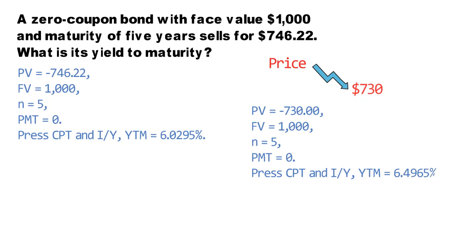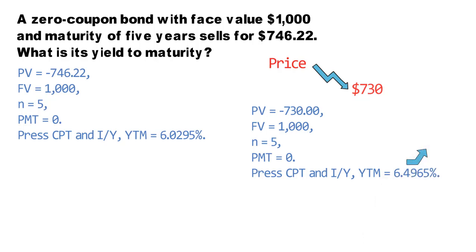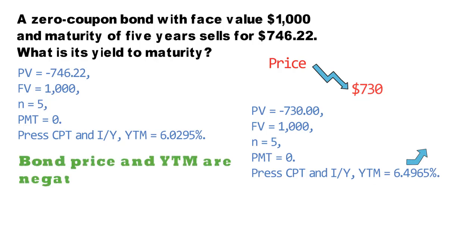The YTM you get is 6.4965%. As you can see, if the bond price falls from 746.22 to 730, the YTM of the bond goes up to 6.4965%, suggesting that bond price and YTM are negatively related. Thanks for watching this video.